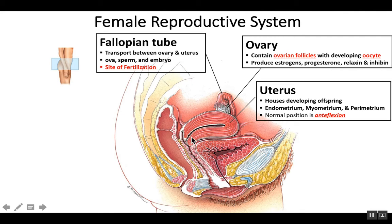This drawing shows the normal position of the uterus — above the urinary bladder, slightly behind the urinary bladder, but it curves forward over top of the urinary bladder. We call this normal position anteflexion.